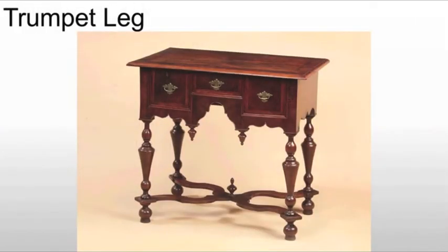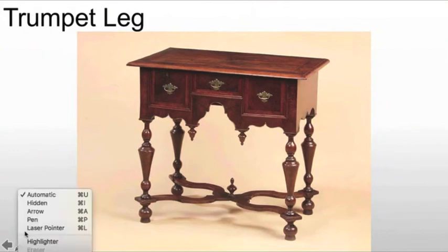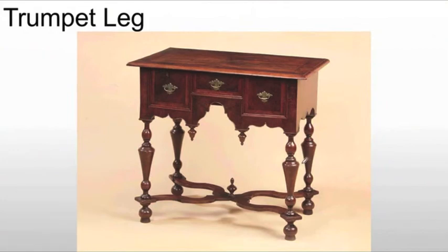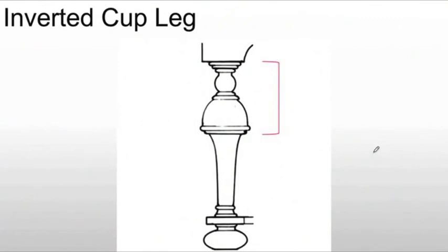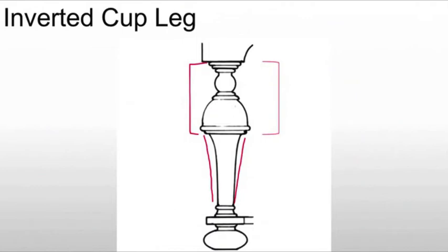There are a few things to note in William and Mary furniture. First, the trumpet leg — a leg that starts at a very narrow point and expands as it moves up, just like the bell of a trumpet. We will also see the inverted cup leg, often at the top, so we have a trumpet leg underneath with an inverted cup on top. Here is the drinking edge, here is the stem, here is the base — flipped over. It looks very similar to the cup and cover we saw from Elizabethan England.